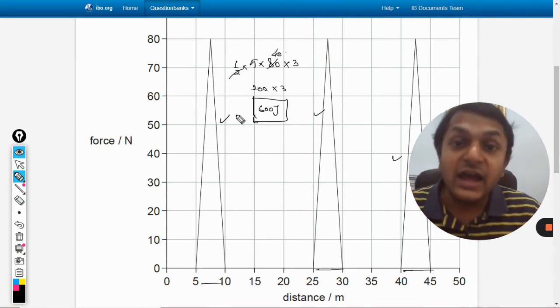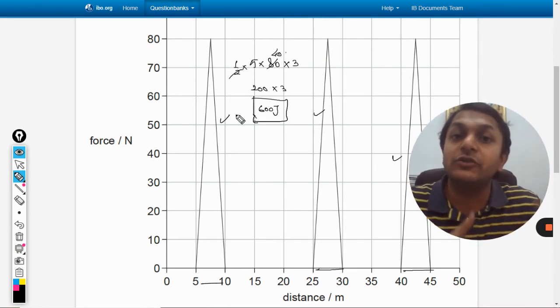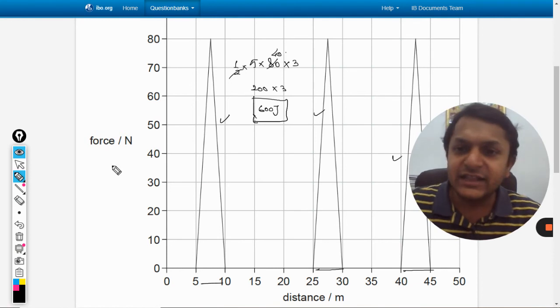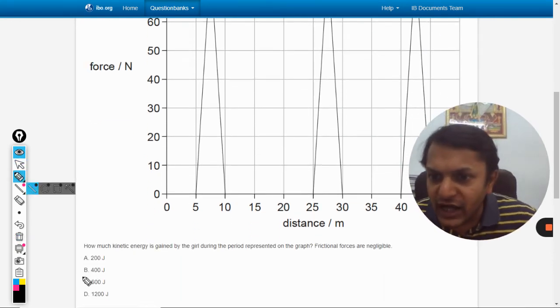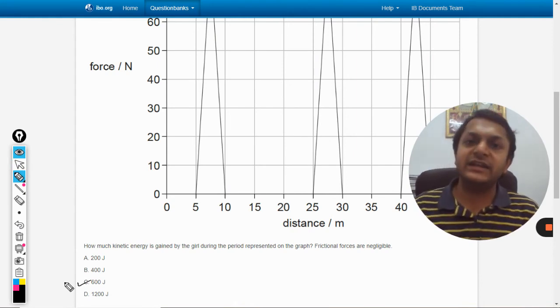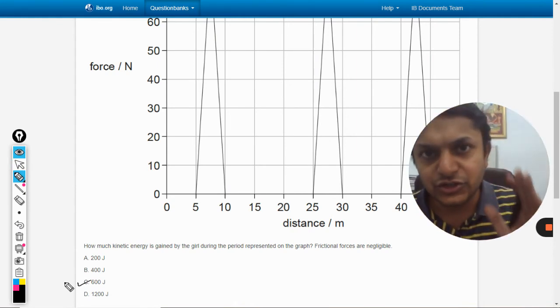600 Joule is the total area. That will be equal to the total work done, and the complete work done will be equal to the total change in kinetic energy. That's what is asked from us. So our answer should be C, that is 600 Joule.